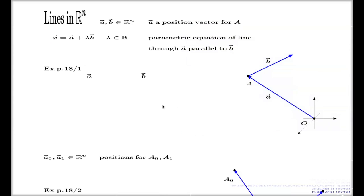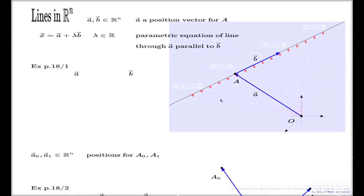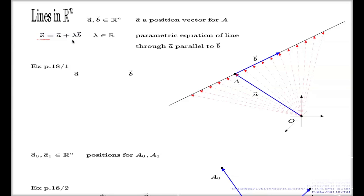I'll show you this on this picture. These red dash arrows represent the vector x on the left-hand side of the expression. By taking different values for lambda, the vector x will take different positions along this line. That's why we call it a parametric equation for the line.